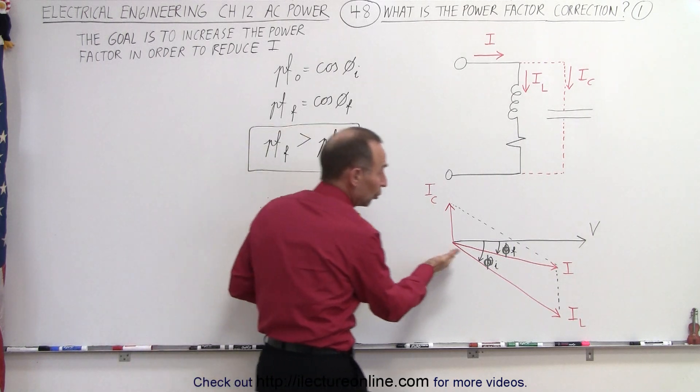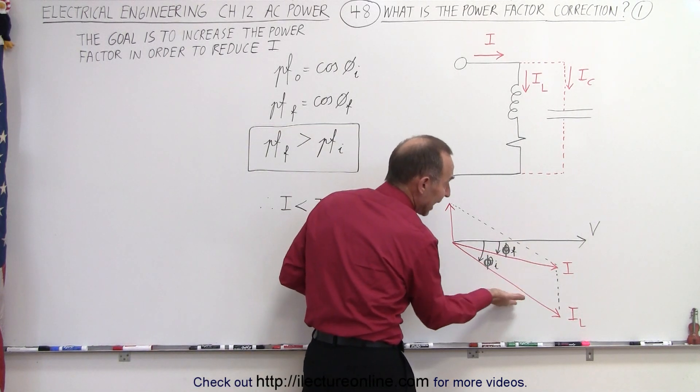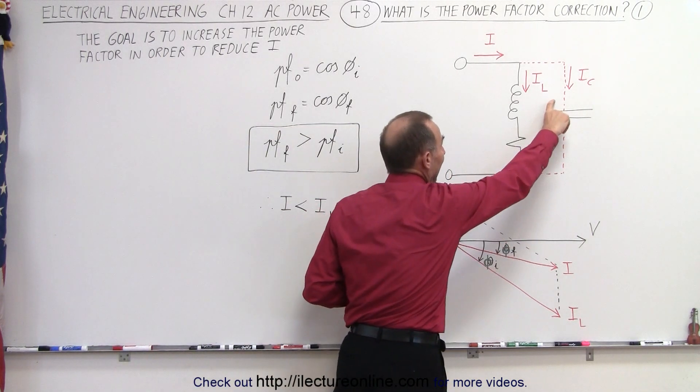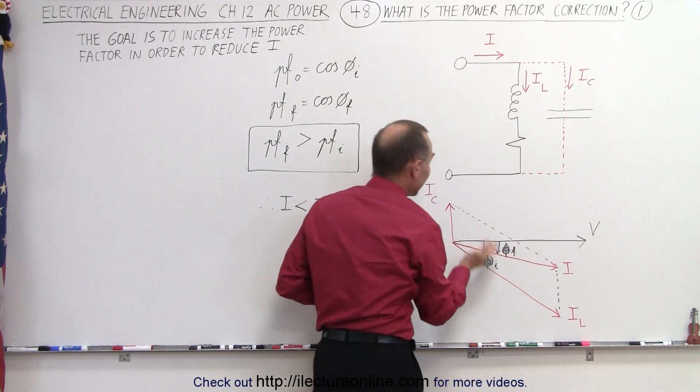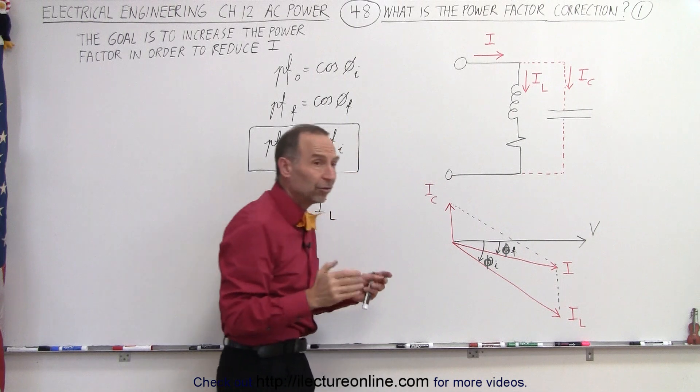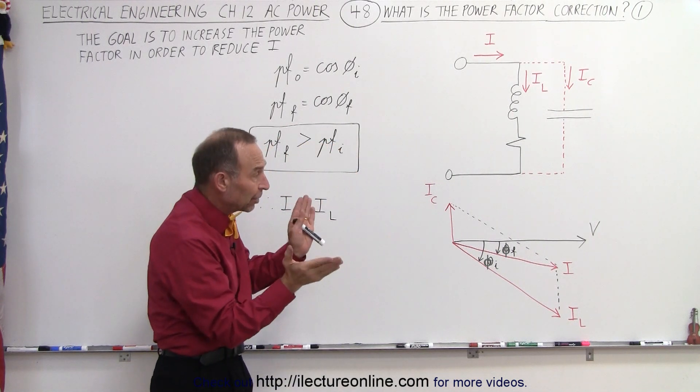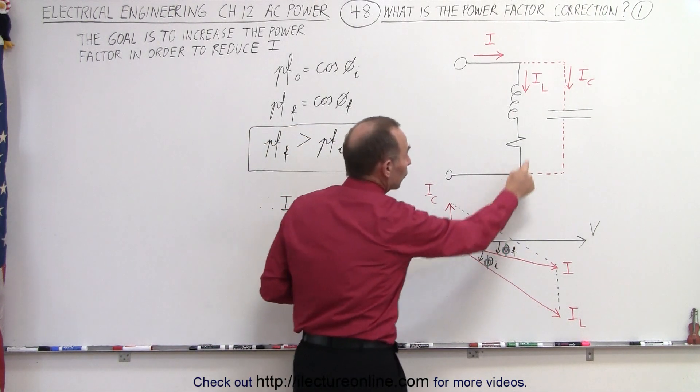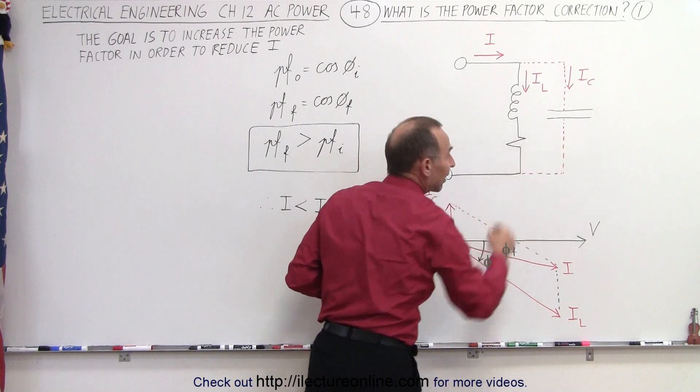Matter of fact, the current to the load is always going to be a lagging current. If we put a capacitor in parallel to the load, that current is going to be 90 degrees ahead of the voltage. So now we see that there's a greater than 90 degree difference between the current to the load and the current to the capacitor.